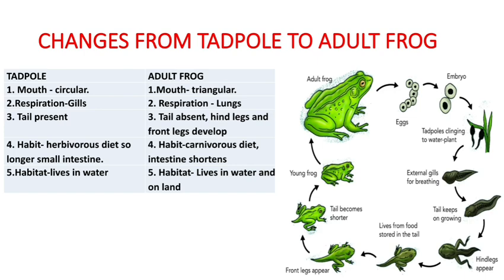In today's lecture, we described the various steps of egg formation in the case of the hen. We differentiated between oviparous and viviparous animals, and between direct and indirect development. Finally, we dealt with metamorphosis and the various steps when metamorphosis occurs — from tadpole to adult frog. In tomorrow's lecture, we are going to make a quick recap of the same chapter. Till then, take care. God bless you all.